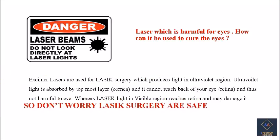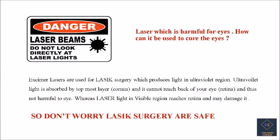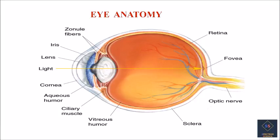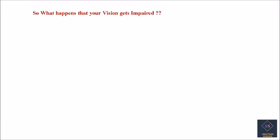Don't worry — LASIK surgery is safe. This is your eye anatomy. Light reflected from an object reaches the lens, which focuses it onto the retina. From the retina, the signal is transferred to the brain through the optic nerve, and this is how we are able to see any object. But if the light from the object is not able to focus on the retina, we get a blurred vision.